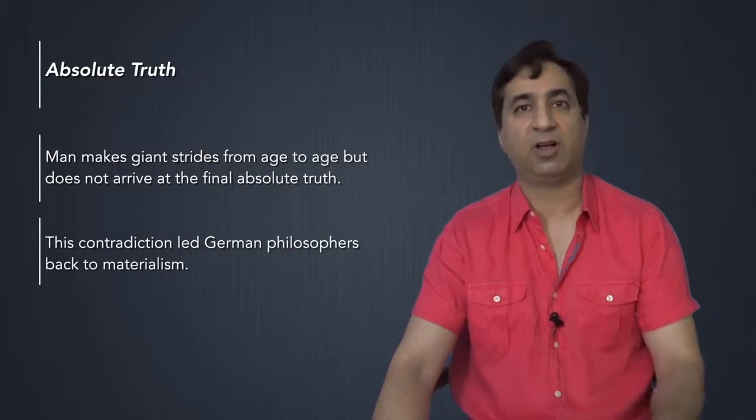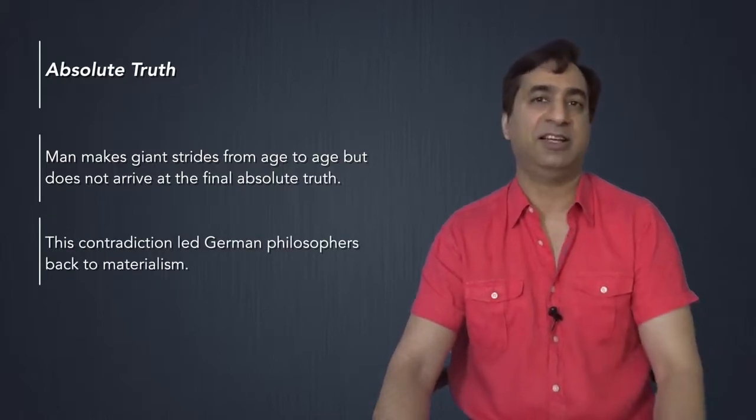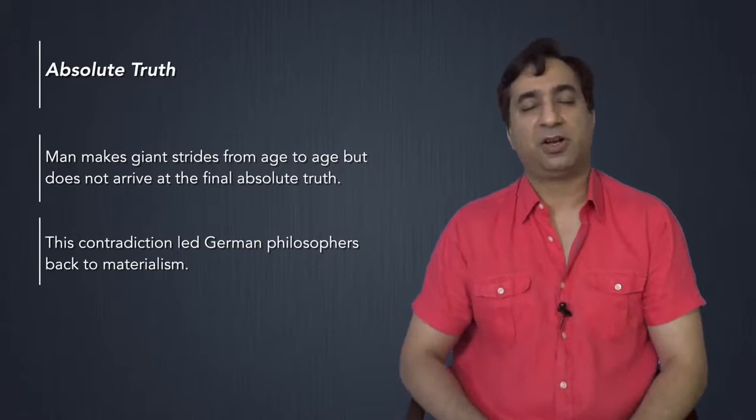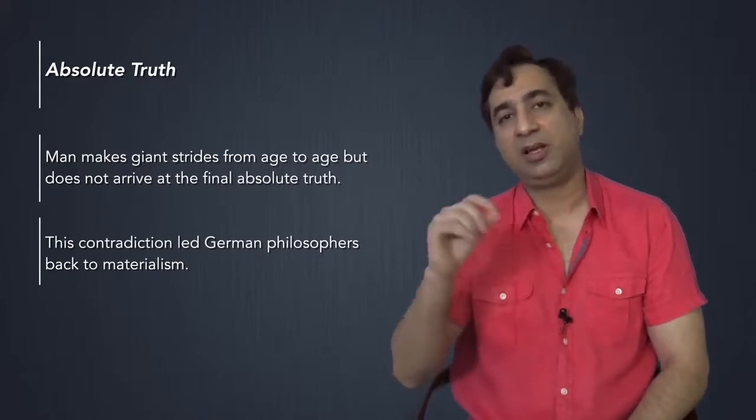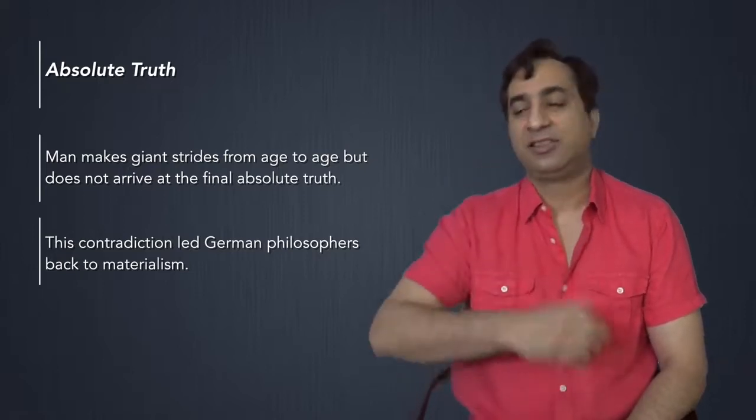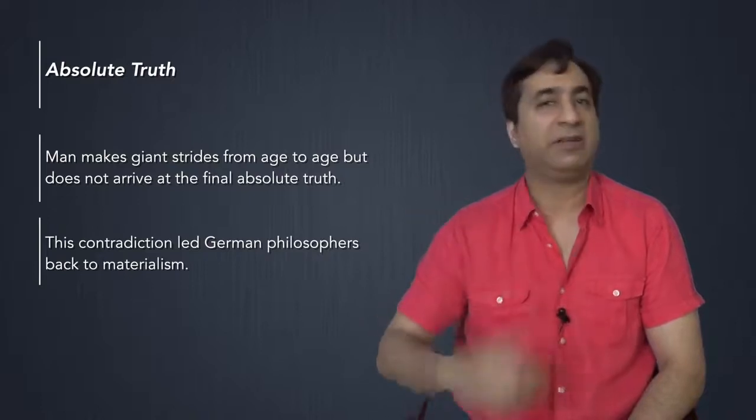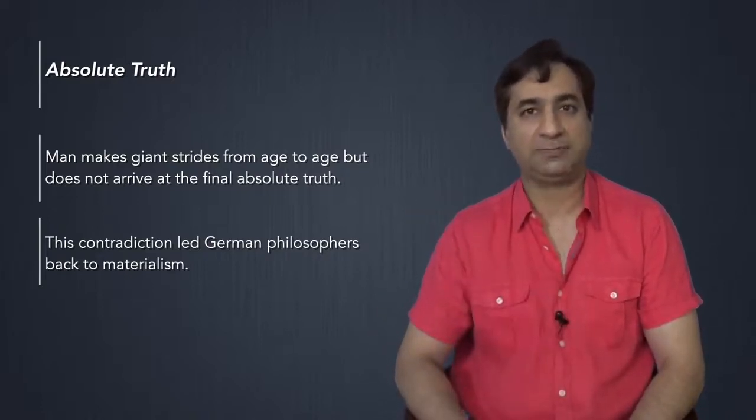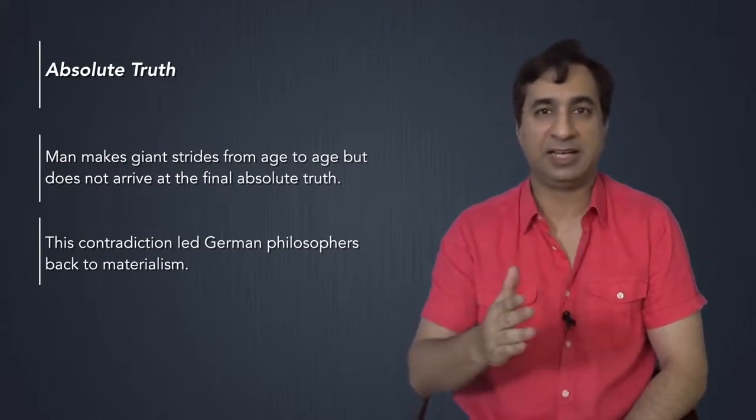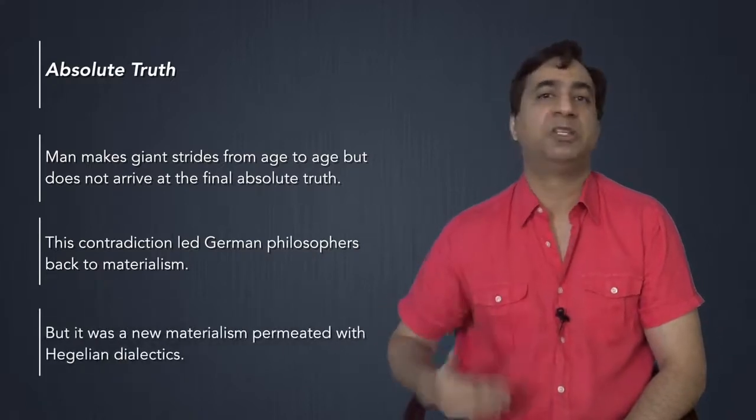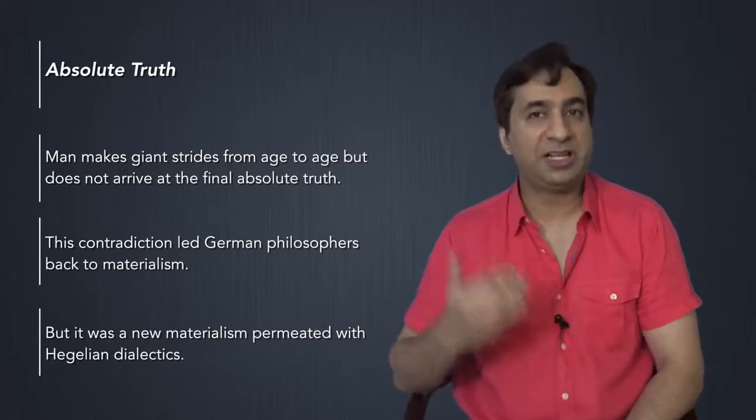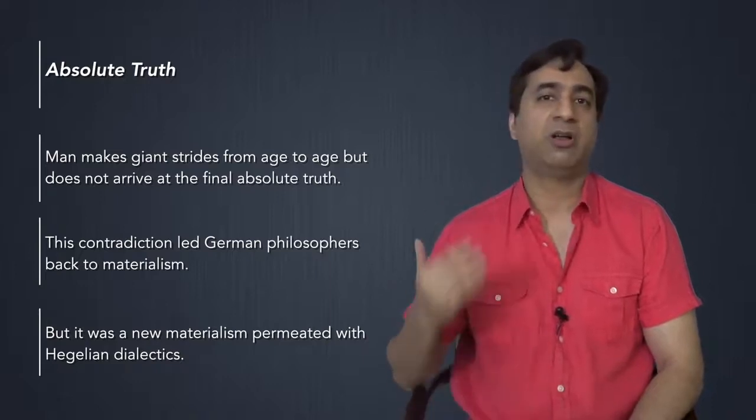This contradiction led German philosophers back to materialism. Because they rejected Hegel on the foundation, or at least some of Hegel's disciples rejected their master's philosophy on the foundation, that Hegel cannot be the last word in philosophy, because that would contradict the dialectical idea that things continue to develop infinitely, continue to evolve infinitely. So those who disagreed with Hegel on this particular issue became what are known as the left Hegelians. And they went back towards materialism. But this was a materialism permeated with Hegelian dialectics, because this was a materialism searching for the laws of historical evolution.